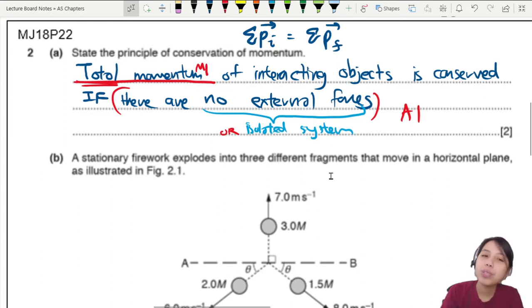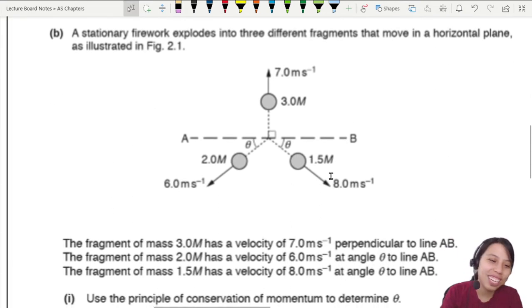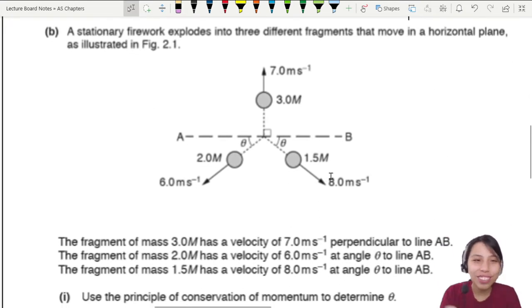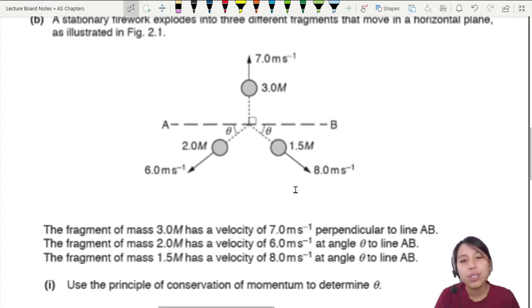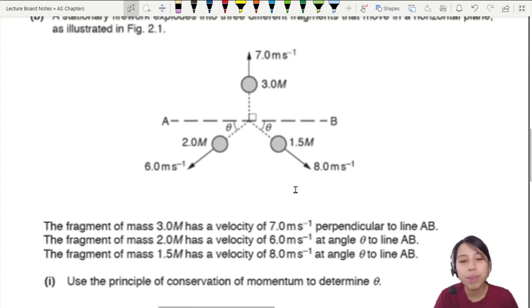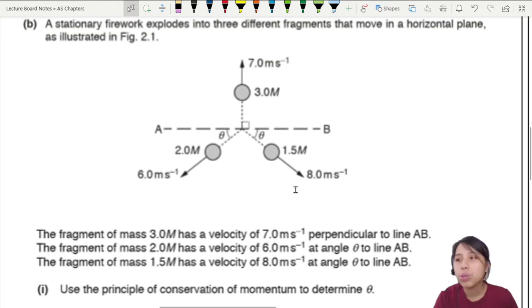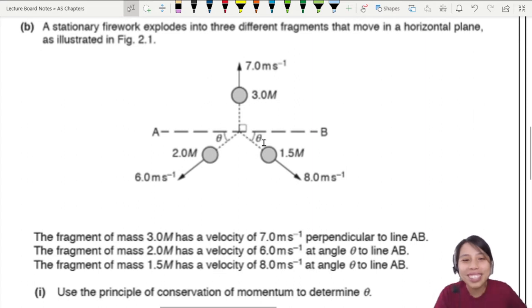All right, let's move on to the main challenge of the day. So there is a stationary firework exploding into three different fragments. How do we solve this question? The fragment, 3M got velocity, 2M got velocity, 1.5 got velocity. I'm not gonna read it. You look at the diagram yourself. So what we need to do is use the principle of conservation of momentum to determine theta. What is this angle?